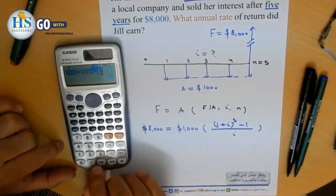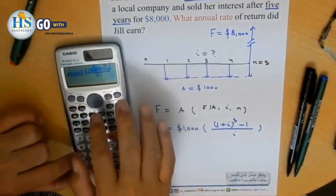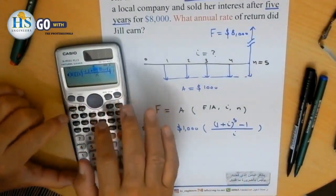Open parenthesis, top: 1 plus X unknown raised to 5 minus 1, bottom: X unknown.